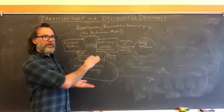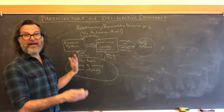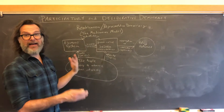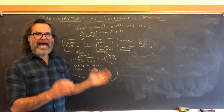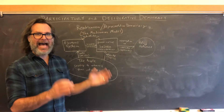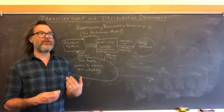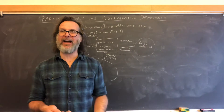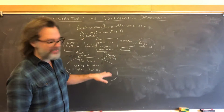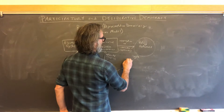This is where participatory and deliberative democracy come in. They take this basic model — which is built into our institutions; any democratic system will have an electoral system and a governance system — and want to add and transform certain features so that there's a greater sense of popular connection to policy outcomes. One of the very first forms of participatory democracy that now doesn't even get discussed under that rubric is direct democracy.